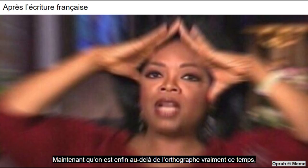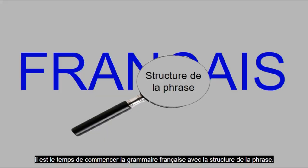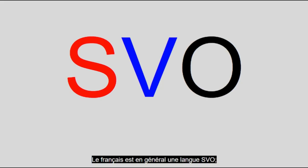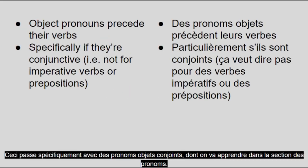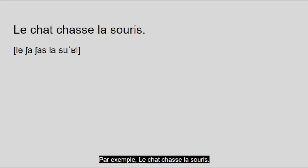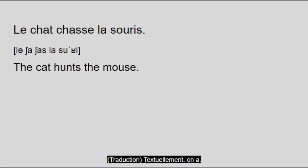Now that we're finally beyond the orthography, time to start French grammar off with the sentence structure. French is overall an SVO language. However, object pronouns often precede their verbs, breaking this rule — specifically with conjunctive object pronouns. For an example: le chat chasse la souris. This means 'the cat hunts the mouse.' Word for word, we have definite article, noun, verb, definite article, noun — SVO.